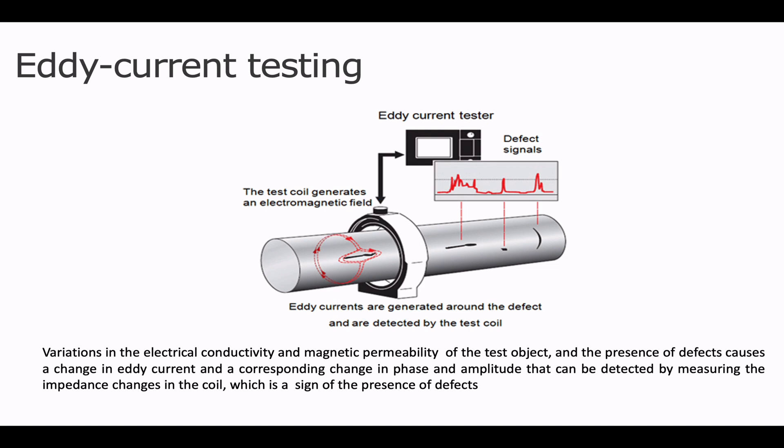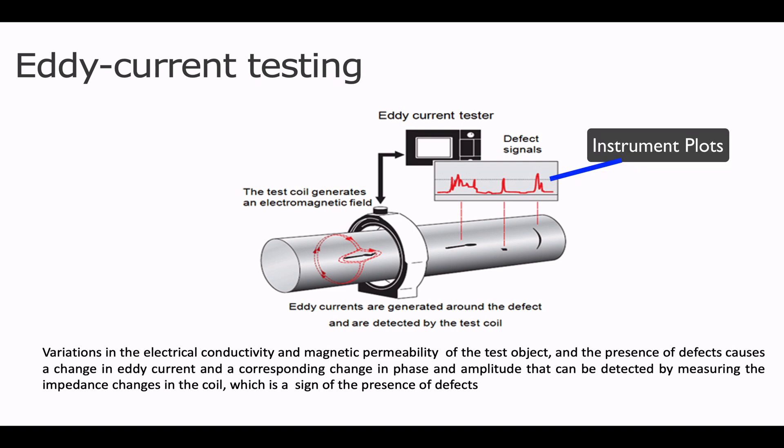Changes in metal thickness or defects like near-surface cracking will interrupt or alter the amplitude and pattern of eddy current and the resulting magnetic field. This in turn affects the movement of electrons in the coil by varying the electromagnetic impedance of the coil. The eddy current instrument plots changes in the impedance amplitude and phase angle, which can be used by a trained operator to identify changes in the test piece.